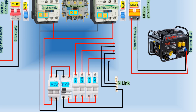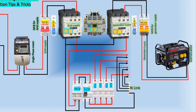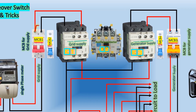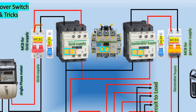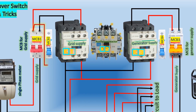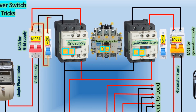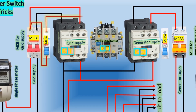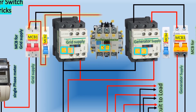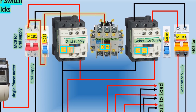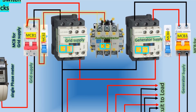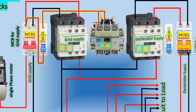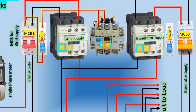Now, let's move on to the control circuit. A wire is taken from the output of two-pole MCB1's phase wire and connected to the single-pole MCB2. From the output of this single-pole MCB, a wire is directed to the coil terminal of the auxiliary contactor. This wire is also looped with the L1 terminal of the auxiliary contactor. Additionally, a neutral wire from the T1 terminal of the auxiliary contactor is connected to the A2 coil terminal of the auxiliary contactor.